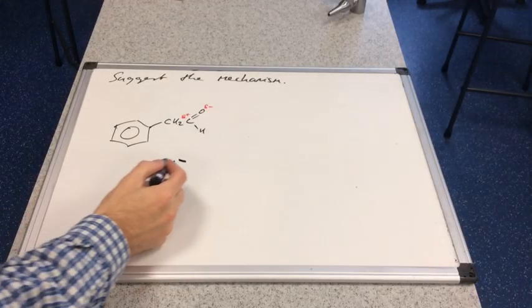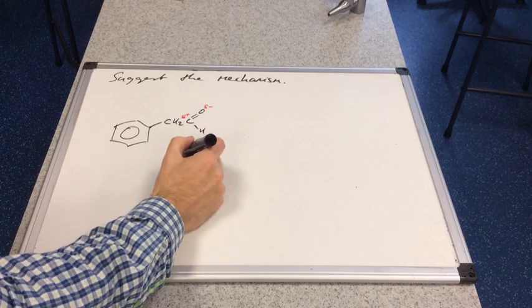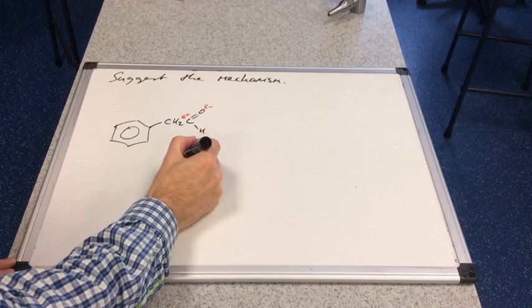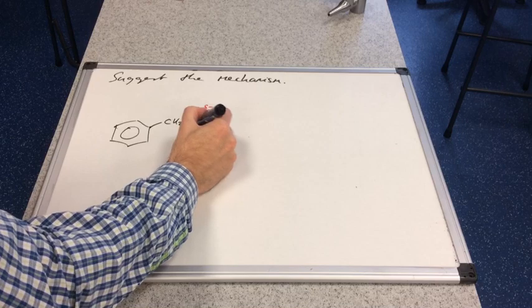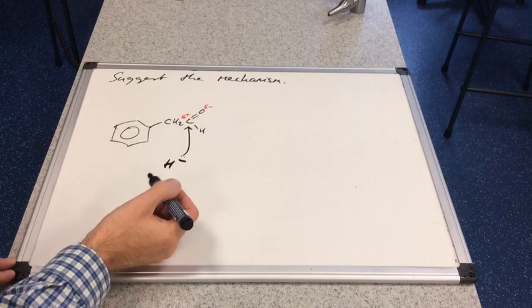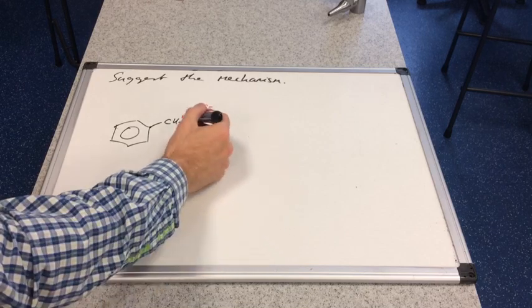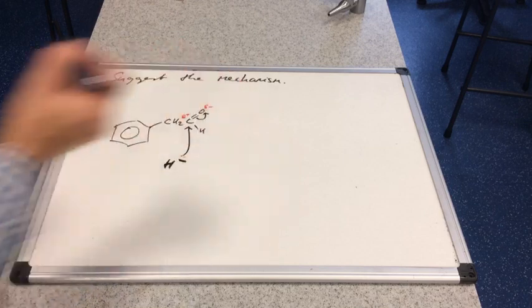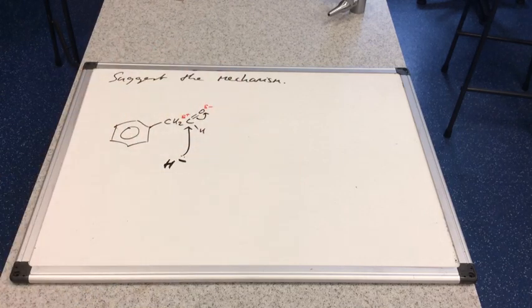So bring the hydride ion in from the reducing agent. Put the lone pair on. And the curly arrow must start from the negative sign of the lone pair. So that's going to be attracted to that slightly positive carbon.